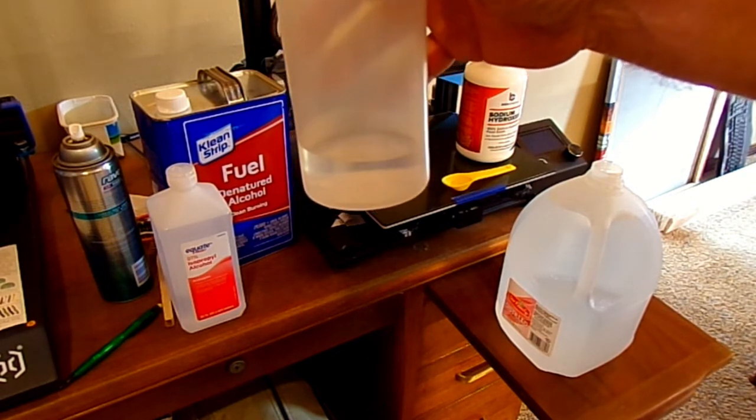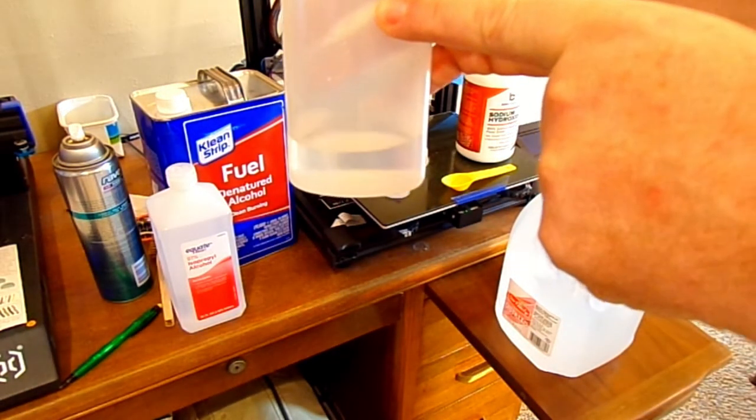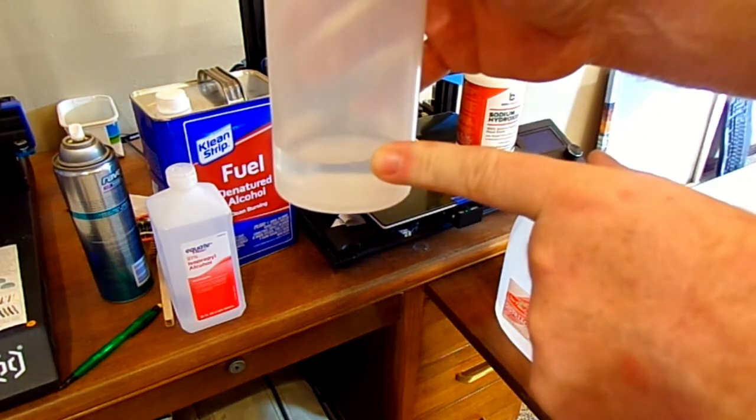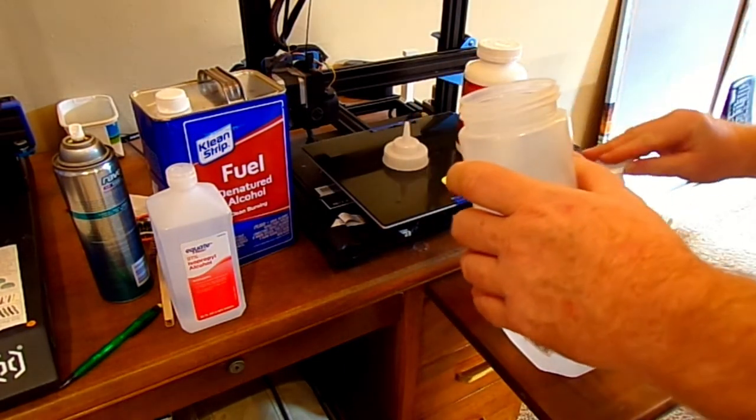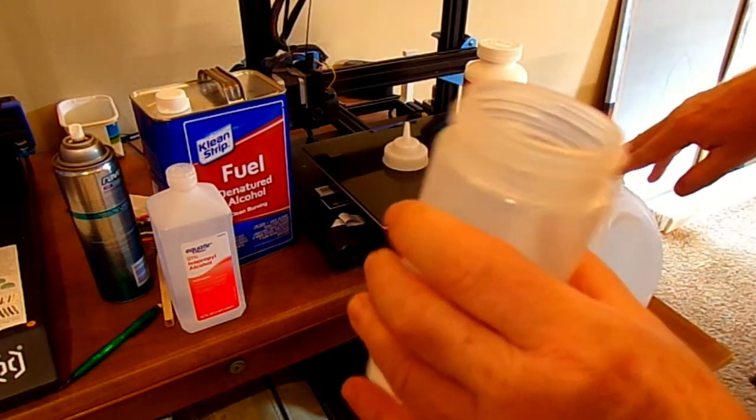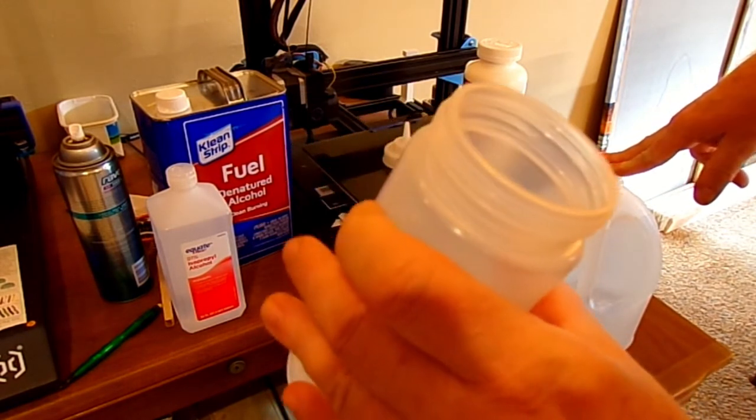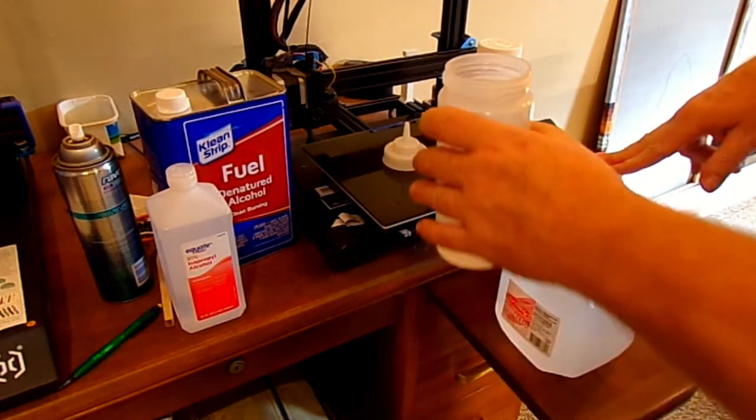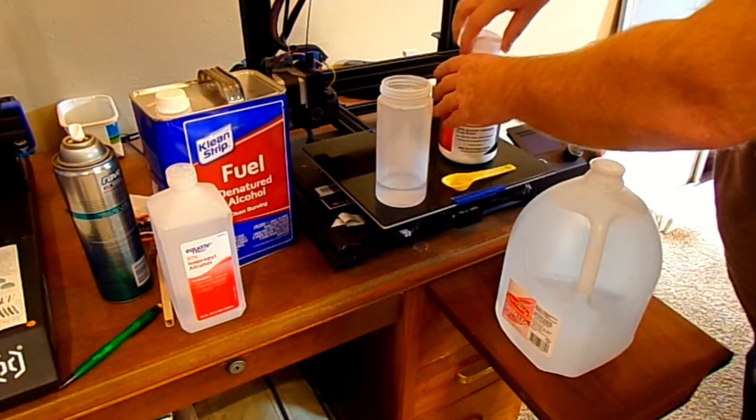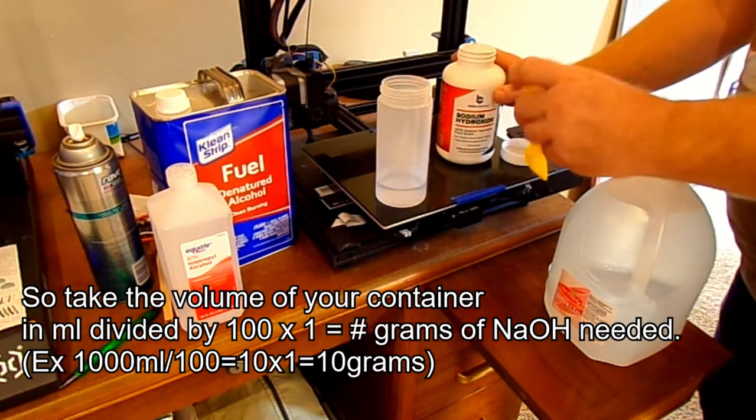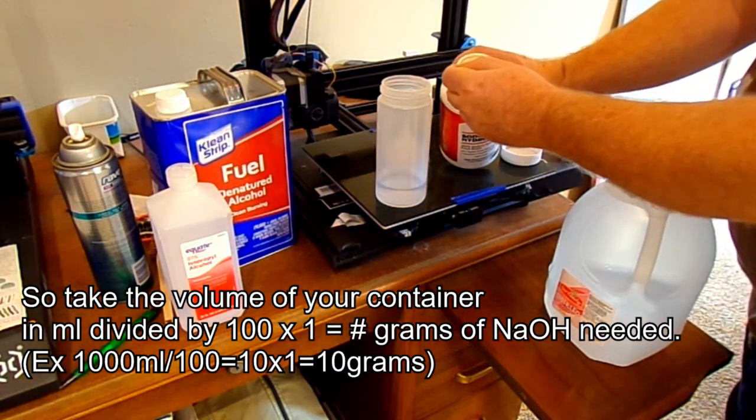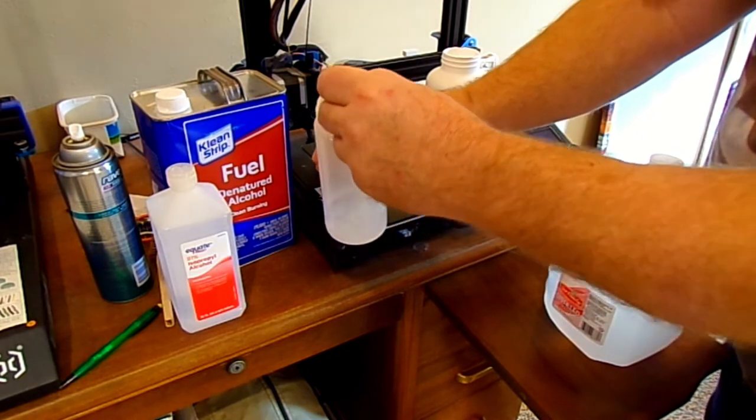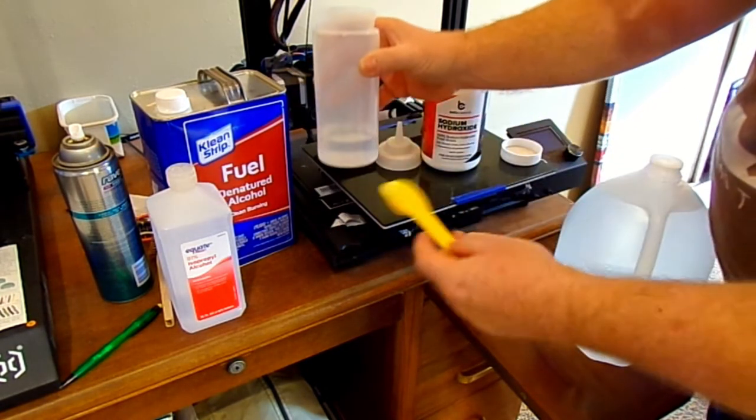That might be a little bit too much, because if half of the bottle is 50 percent, that's probably like 20 percent. I think what I'm going to do is put the sodium hydroxide in there, dissolve it, and then dump a little of the excess into another jar and save it.